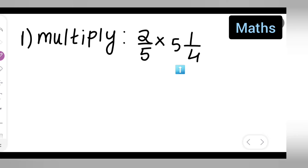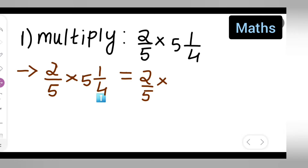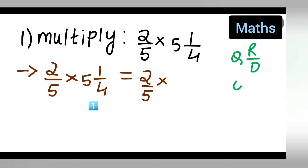So, first, how are you all going to multiply this? Write down 2 upon 5 multiplied by 5 to 1 upon 4. Now, there is a certain rule for that. The form is: quotient remainder upon dividend. So, you are going to multiply it with D plus remainder upon D.